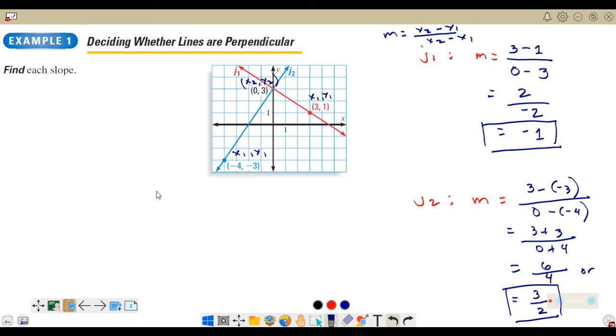Now let's check the product. The slope of J₁ times the slope of J₂ must be equal to negative 1 for them to be perpendicular. So the slope of J₁ is negative 1, the slope of J₂ is 3 over 2. When you multiply them, you will end up with negative 3 over 2, which is not equal to negative 1. So J₁ and J₂ are not perpendicular since they have different slopes.